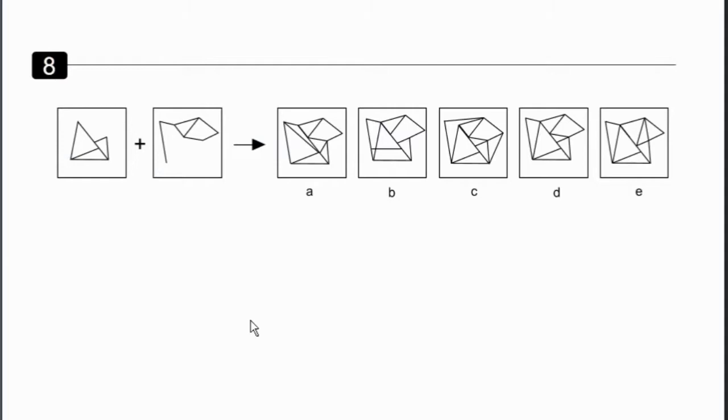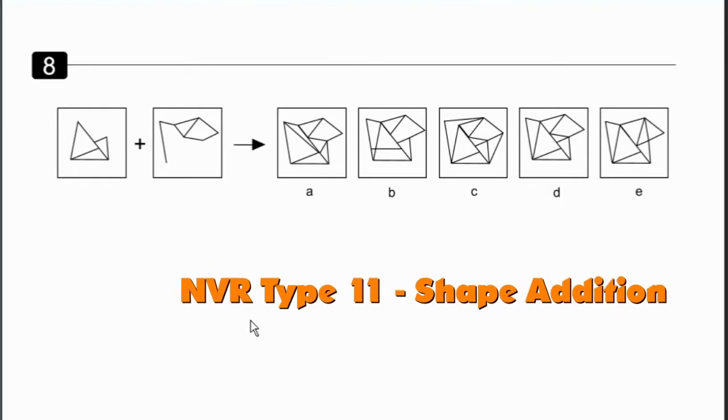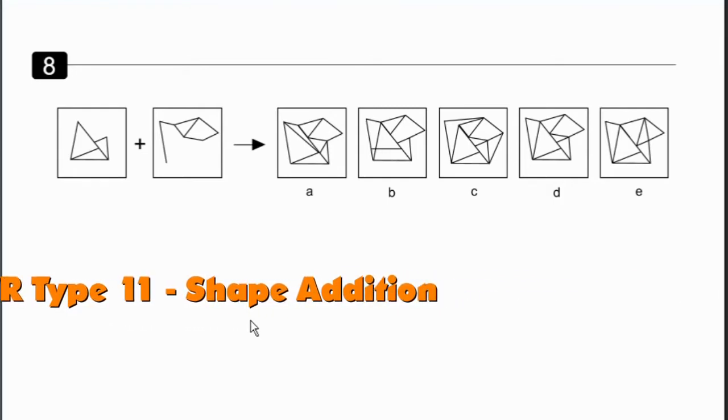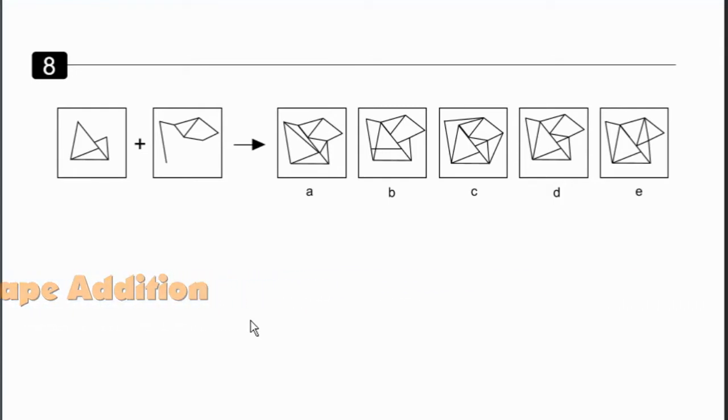Good day people of the internet, today I'm going to show you how to do non-verbal reasoning Type 11, sometimes known as shape addition. The reason it's called shape addition is they give you two shapes on the left, you've got to add those guys together, and then it's going to look like one of these shapes on the right. You've got to choose A, B, C, D, or E. Okay, so just so you get the concept...